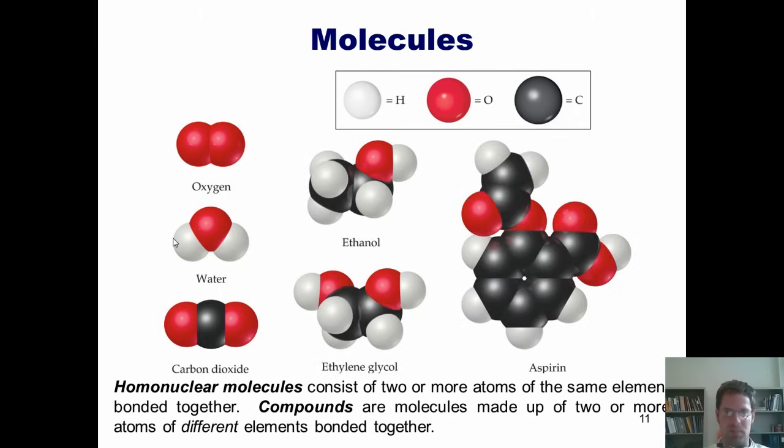Here are a few different examples as well. This is a structural model of ethanol, which is also made up of multiple different elements bonded together. This one is ethylene glycol, and this one is aspirin. You can see that all of these substances are all compounds. Oxygen, of course, is a molecule as well, but it's a homonuclear molecule because all of the elements in it, which are two atoms of oxygen, are the same element.